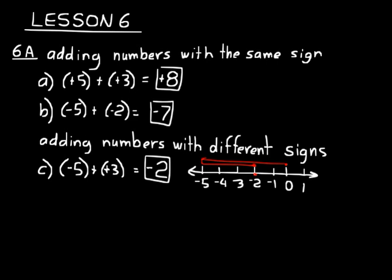Adding using the rules is kind of a shortcut instead of working out a number line every time. But if you need to, at least visualize a number line in your head. That may help you understand why negative five plus a positive three equals negative two and why the rules work the way they do.